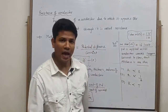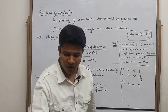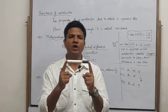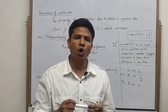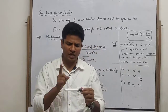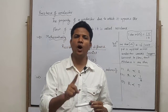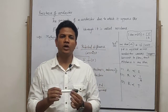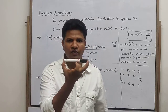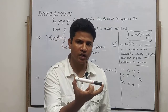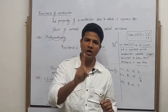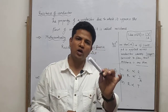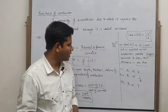One ohm equals one volt upon one ampere. So let us define what one ohm is. If you apply a potential difference of one volt across the ends of a conductor, and due to that one volt potential difference the current flowing through the conductor is one ampere, then the resistance of that conductor will be one ohm.